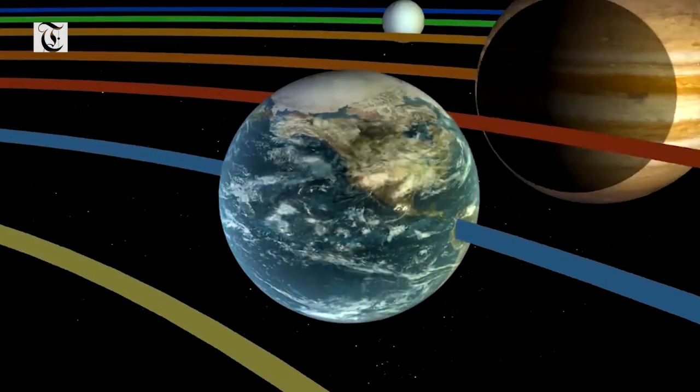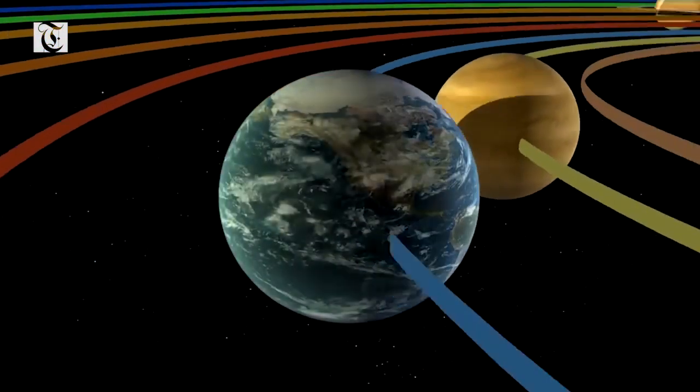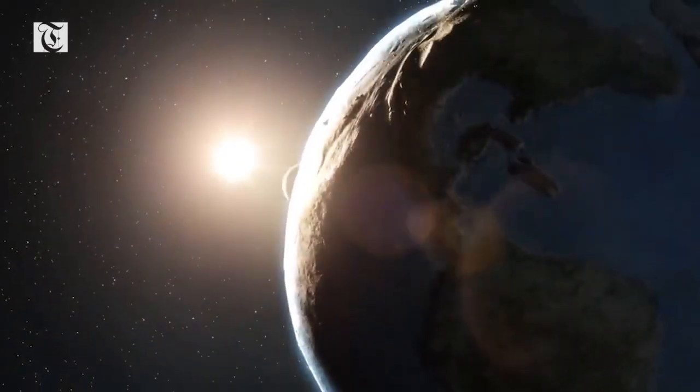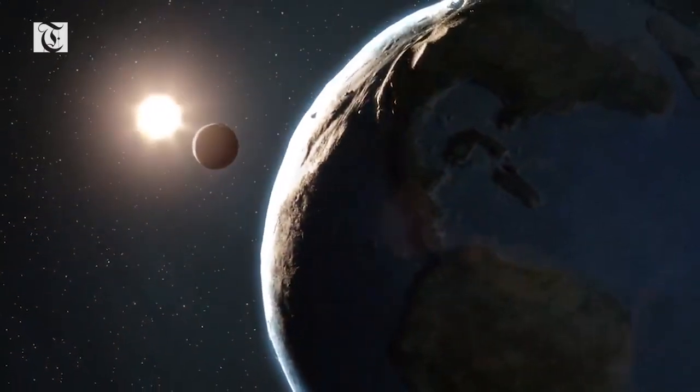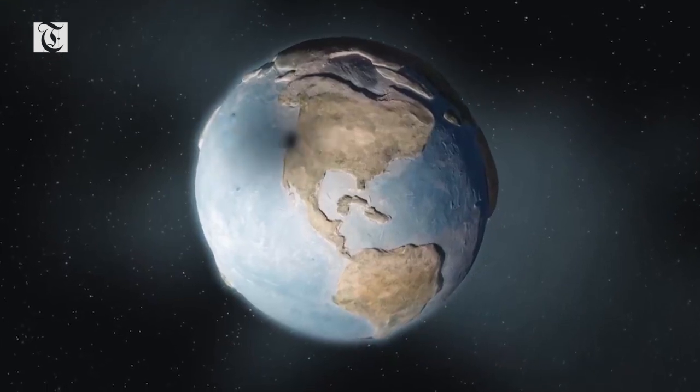This means that a day on Earth is not really exactly 24 hours long, and that the Moon's shadow may move slightly faster or slower during a solar eclipse than predicted.